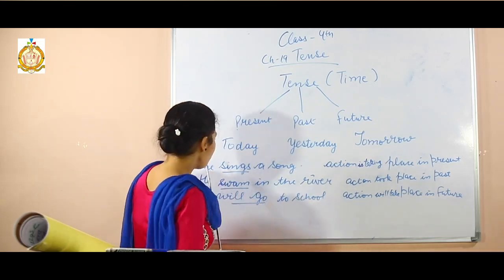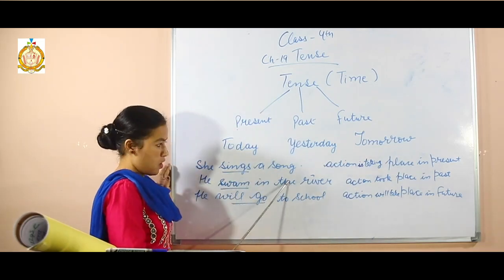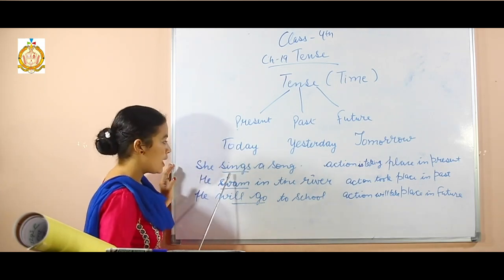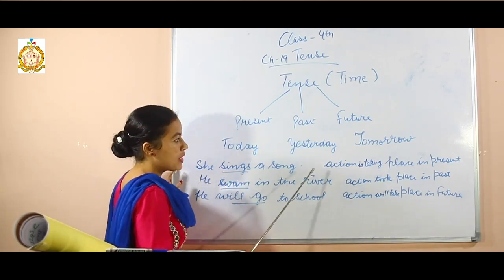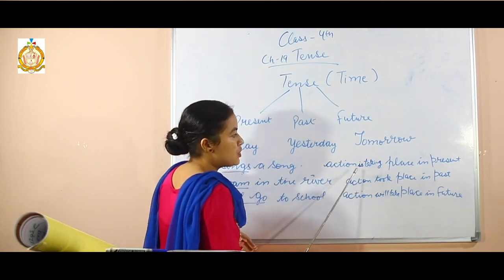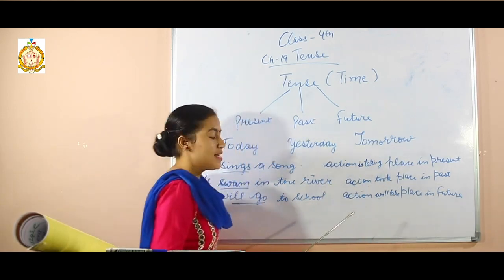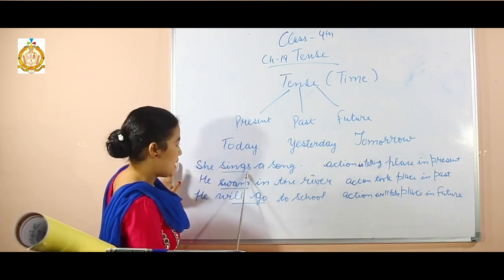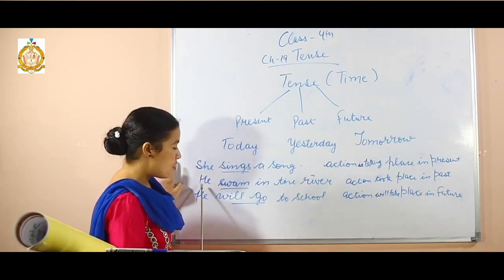Here is an example: 'She sings a song.' Here, 'sings' is the verb. It tells us the action is taking place in the present. This is an example of present tense. Now, another example of past.